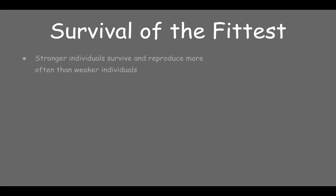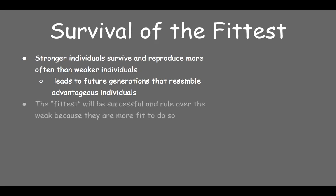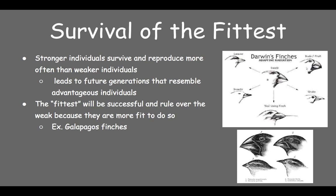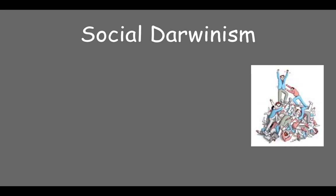The idea of survival of the fittest stems from the concept that strong individuals in a species with desirable traits or phenotypes will outlive and reproduce more often than those lacking such traits, leading to future generations that resemble advantageous individuals. To Spencer, this was the law of life. A common example is the evolution of finch beaks in the Galapagos Islands — finches with beaks best fitted to their needs were able to survive long enough to mate and pass along their advantageous traits.